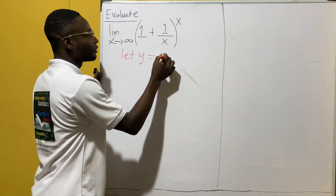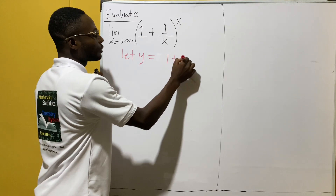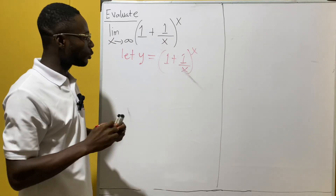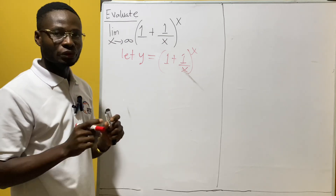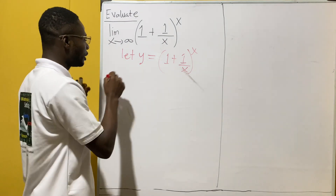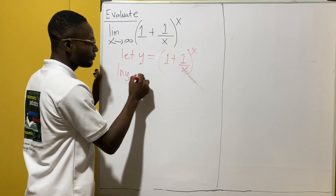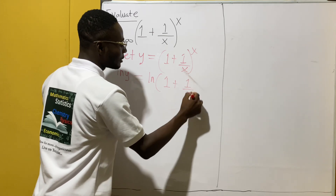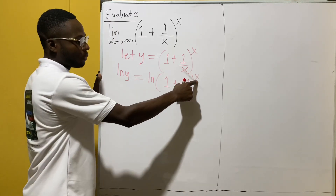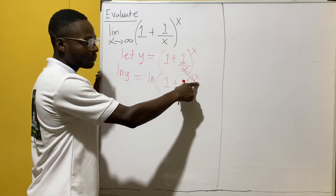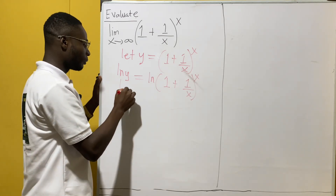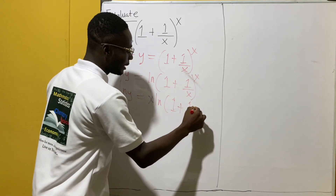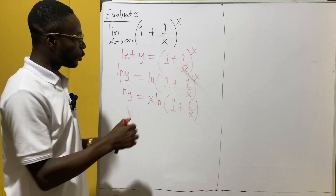Let y equal (1 + 1/x)^x. Once you have this, introduce ln to both sides. So we have ln y equals ln of (1 + 1/x)^x. We drop the exponent x down, so we have ln y equals x times ln(1 + 1/x).